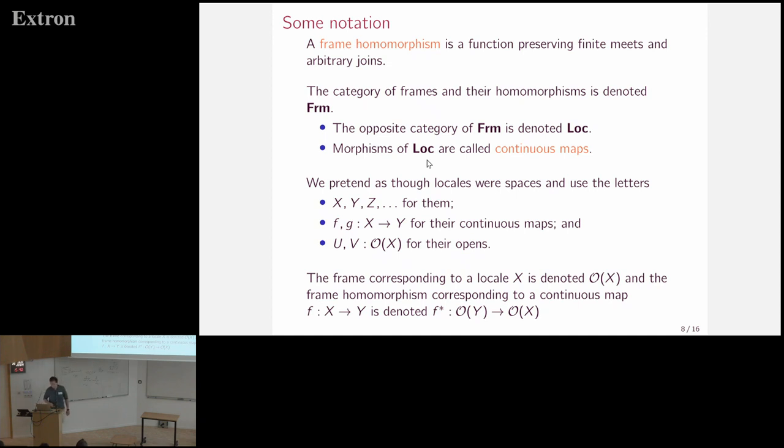And let me also briefly explain some notation that I will be using. So frames, the category of frames and frame homomorphism is called FRM, and locales are objects of the opposite category. And because we pretend that locales were spaces, we call the morphisms of this category continuous maps, and we use naming conventions for topological spaces for them. So capital letters for their elements and letters X, Y, Z for them. And this is the convention from sketches of an elephant by Johnston.